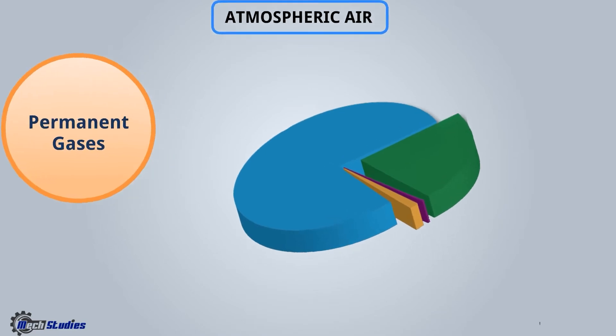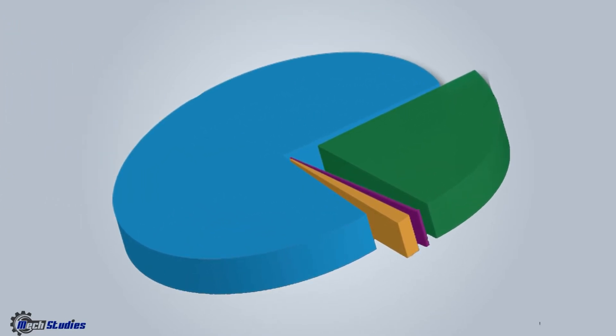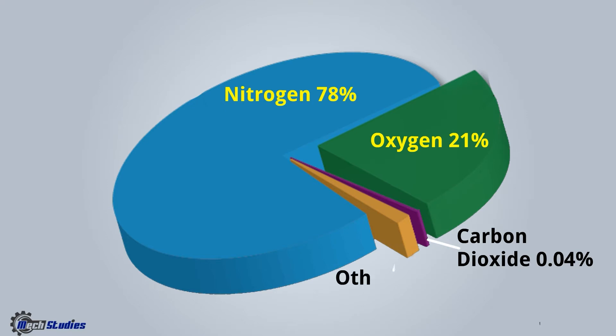Look at this diagram to understand the permanent gases. The maximum gas is nitrogen, which is 78 percent, then oxygen at 21 percent, a very small amount of carbon dioxide at 0.04 percent, and other gases like helium, neon, and argon at 0.96 percent.